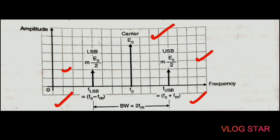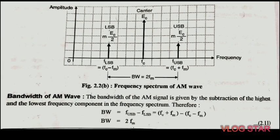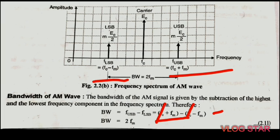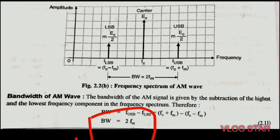For the lower sideband, the frequency is f_c − f_m. The bandwidth of the AM signal is calculated as the difference between the upper sideband frequency (f_c + f_m) and the lower sideband frequency (f_c − f_m), which gives 2f_m. Hence the bandwidth of the AM signal is twice the modulating frequency f_m.